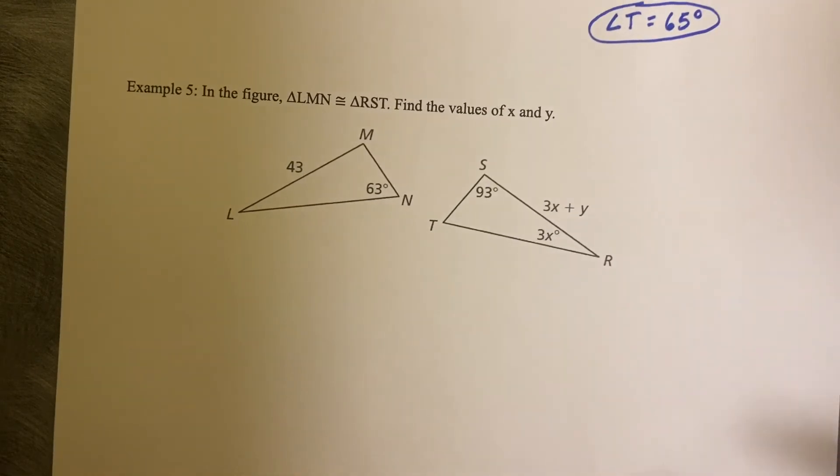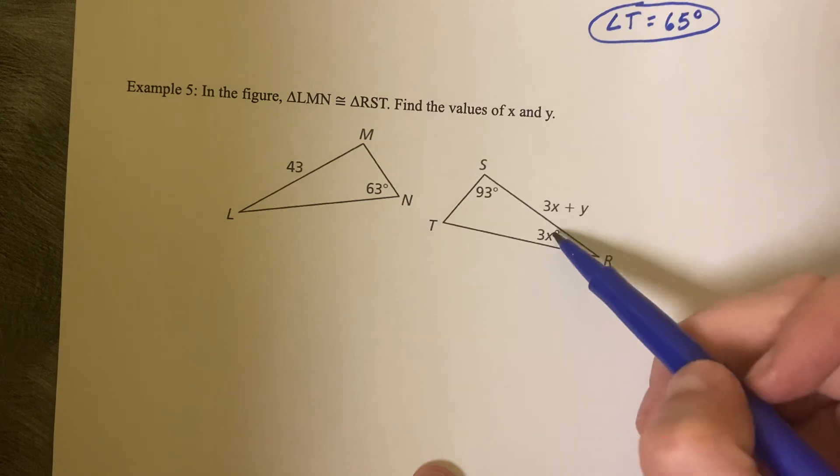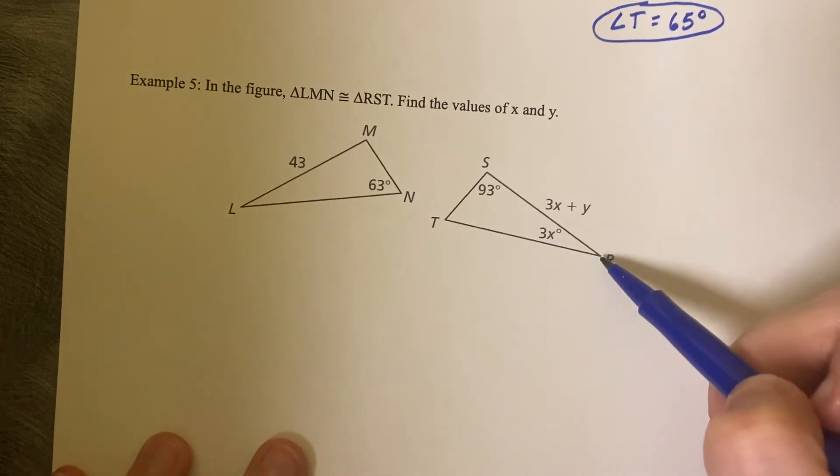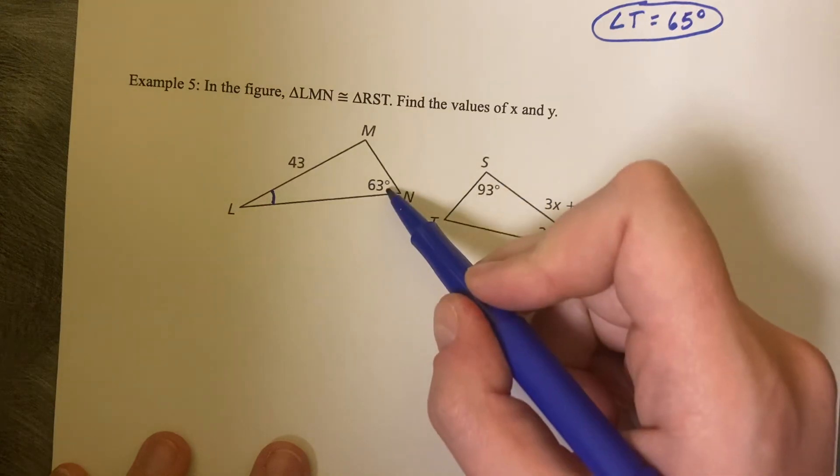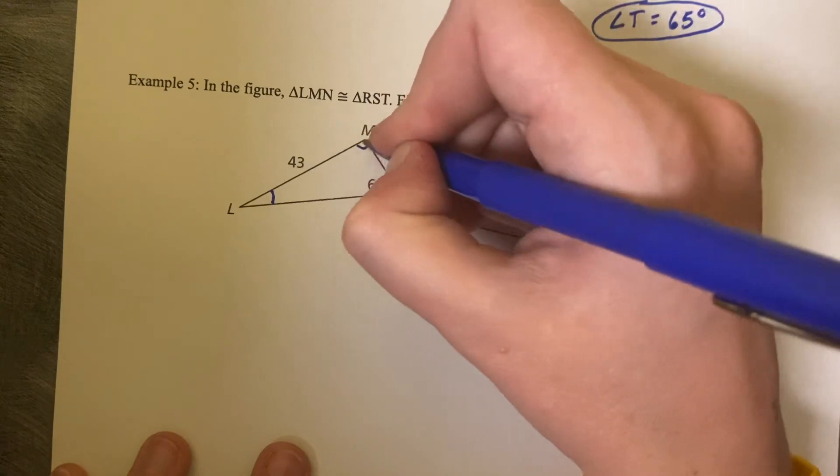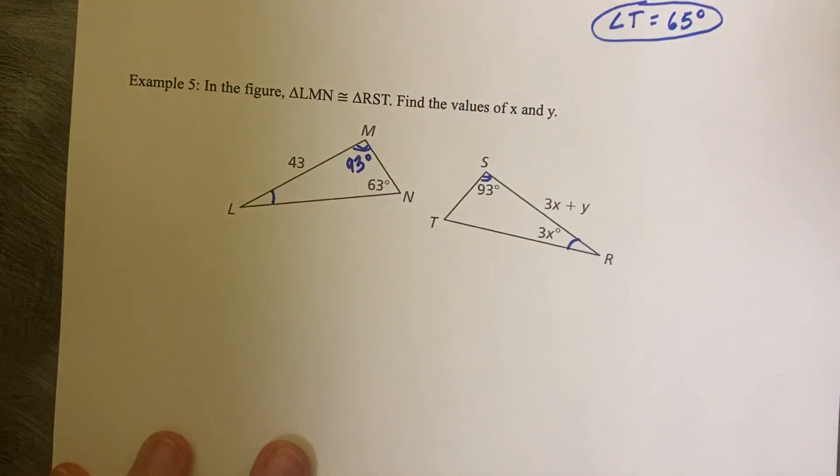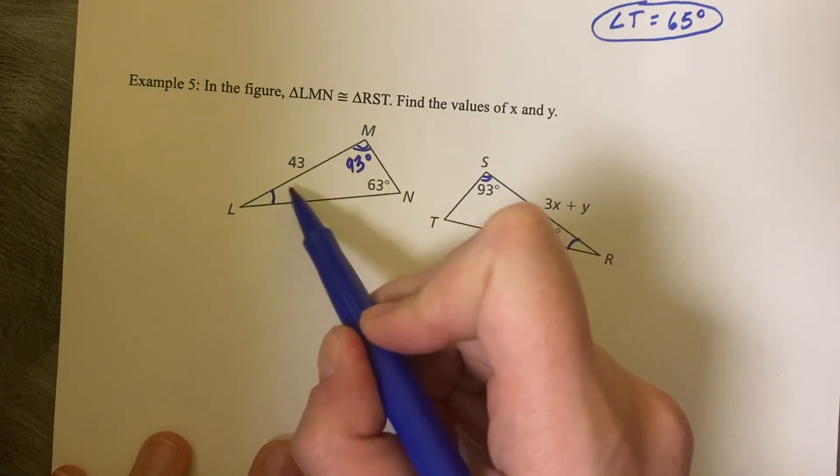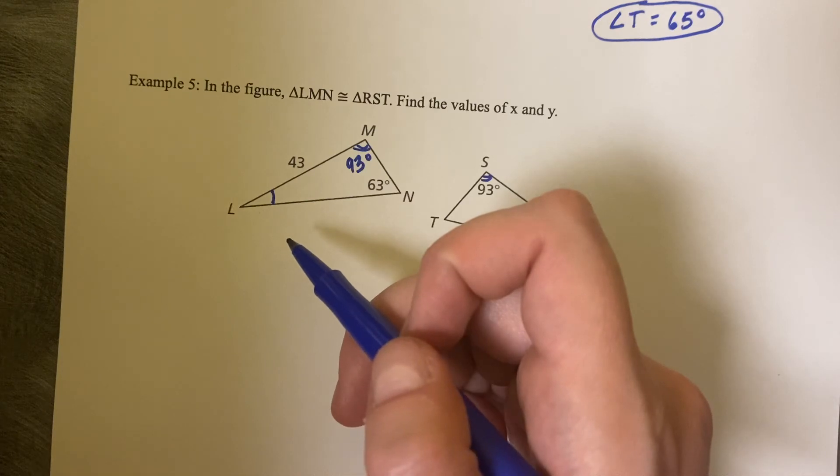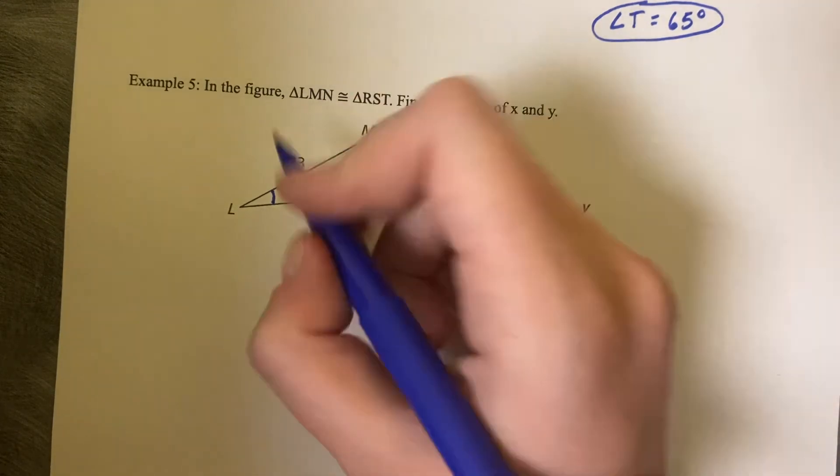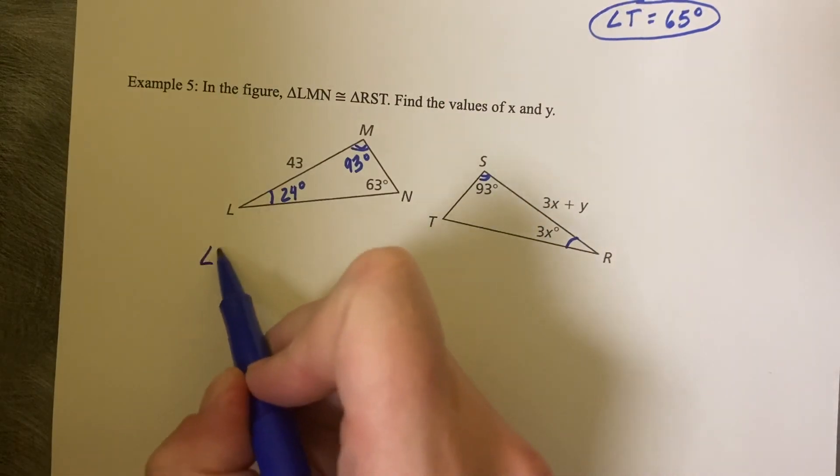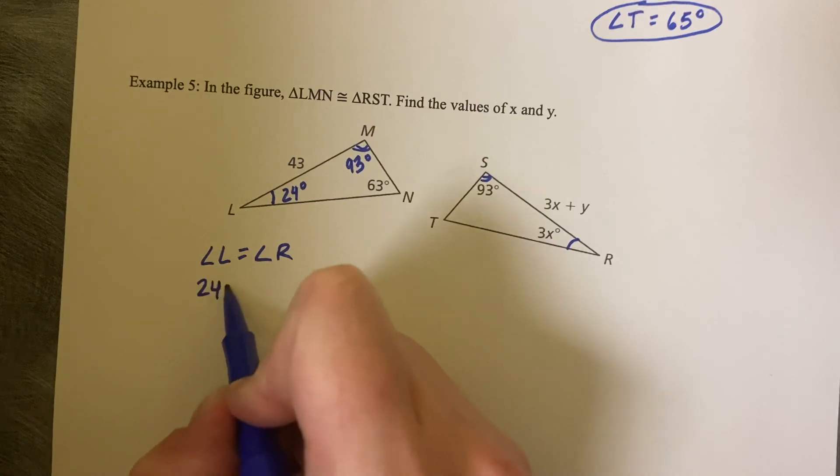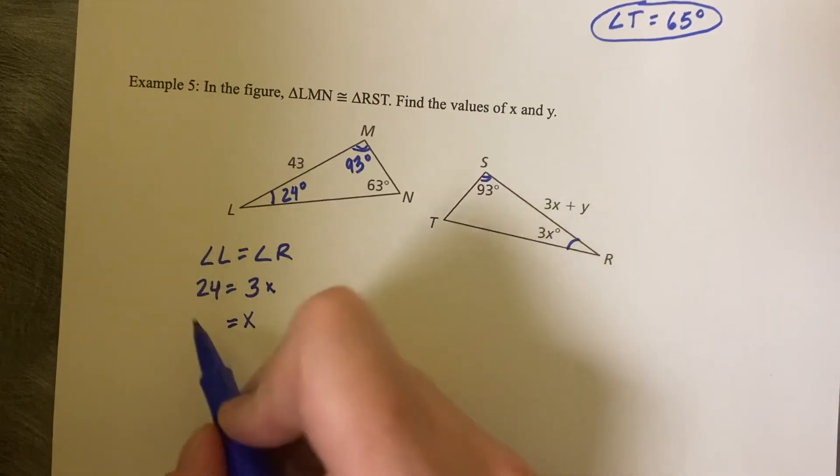Example 5. In the figure LMN is congruent to RST. Find the values of X and Y. So first one I notice is that this X is alone. So this angle R is congruent to angle L. I don't know angle L, but I do know angle S and I do know angle N. So angle S is congruent to angle M. So that means that this is 93 degrees. This is 63 degrees. So we can figure out what this angle measure here is. If we calculate that, if we add 93 and 63 and subtract from 180, we get 24. So that means that angle R and angle L are congruent. So angle L equals angle R. So 24 equals 3X. Divide by 3 and we get X equal to 8.